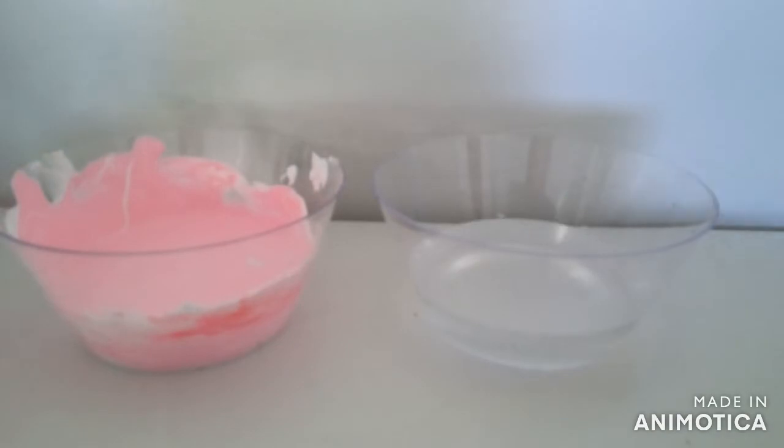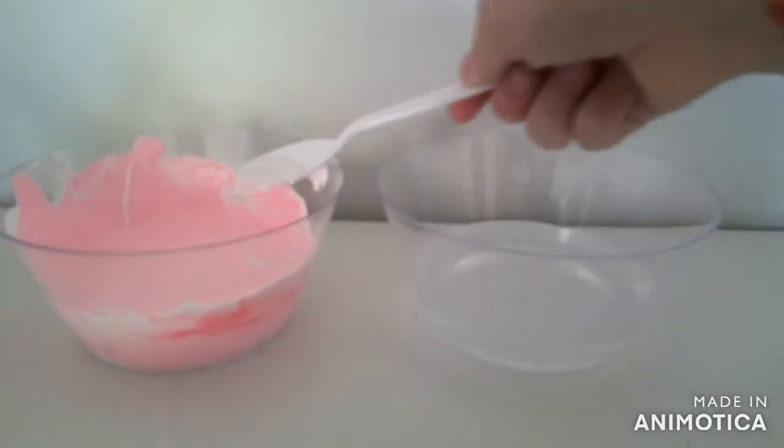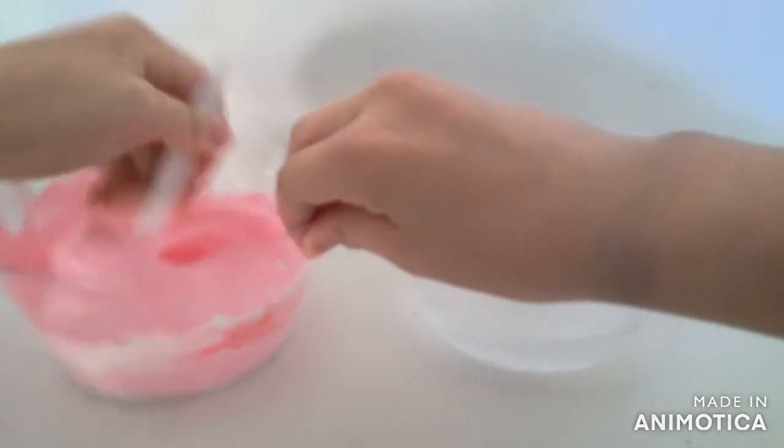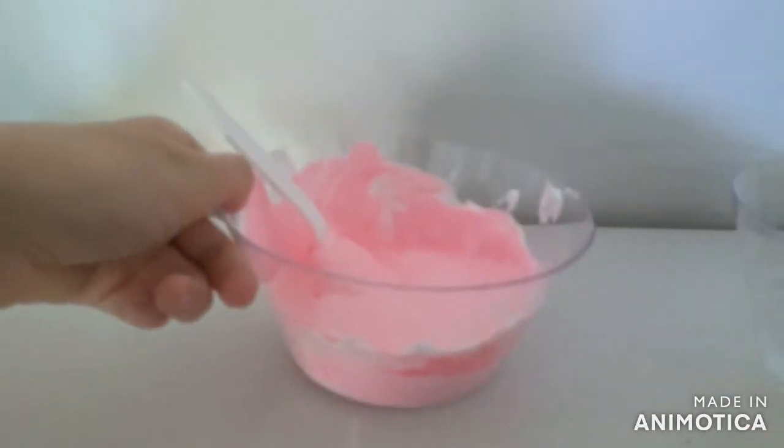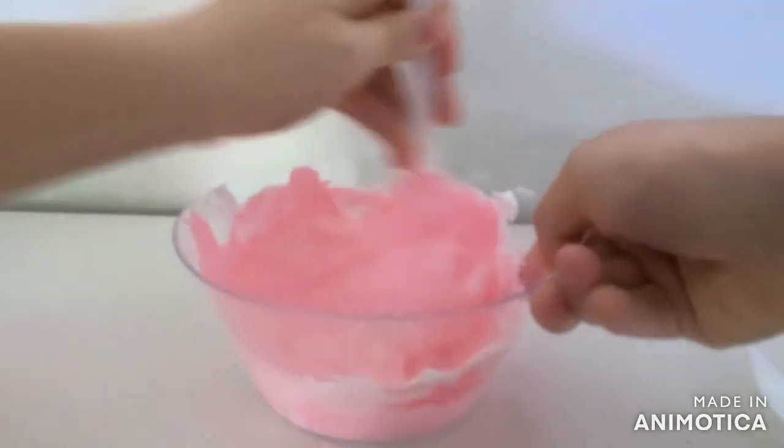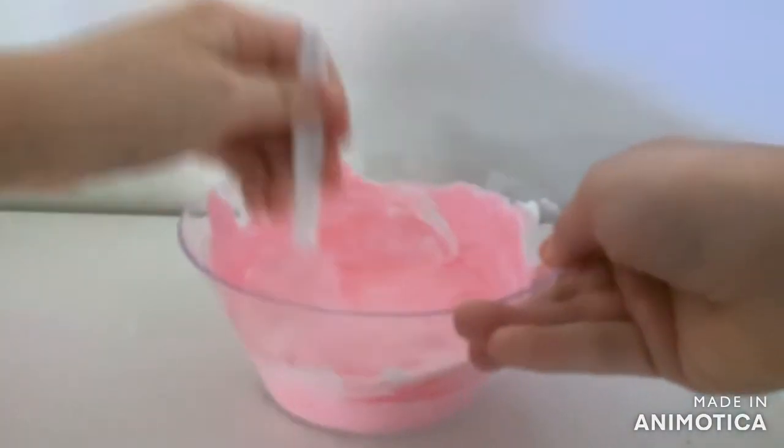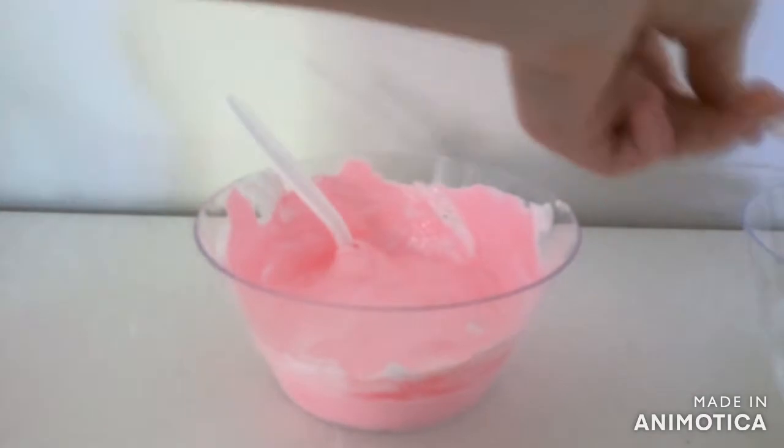Okay, so now that that's all combined we can start activating our slime. Slowly add a little bit of the activator to your glue and shaving cream mixture. Almost immediately you should see the slime coming off the sides of the bowl - that is a good sign and shows you that your slime is coming together.